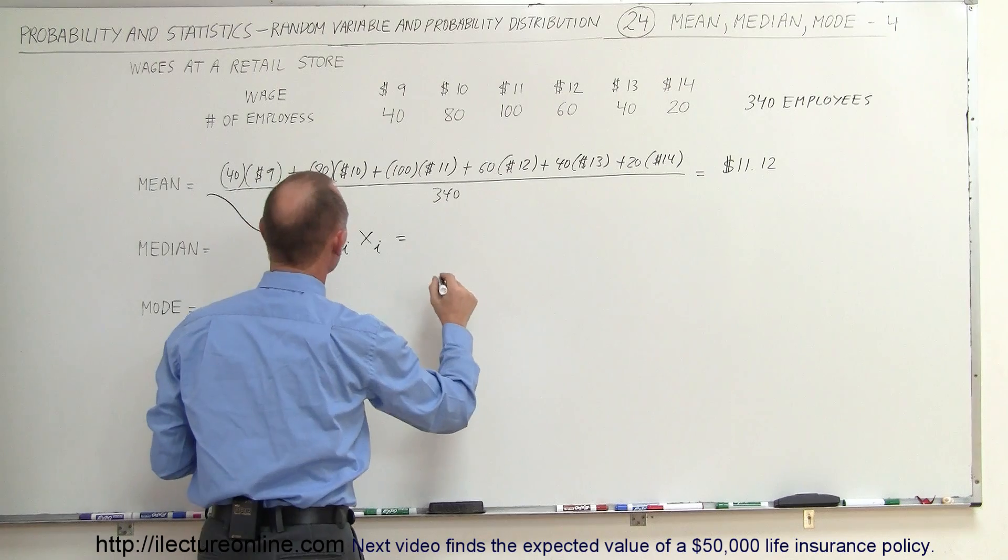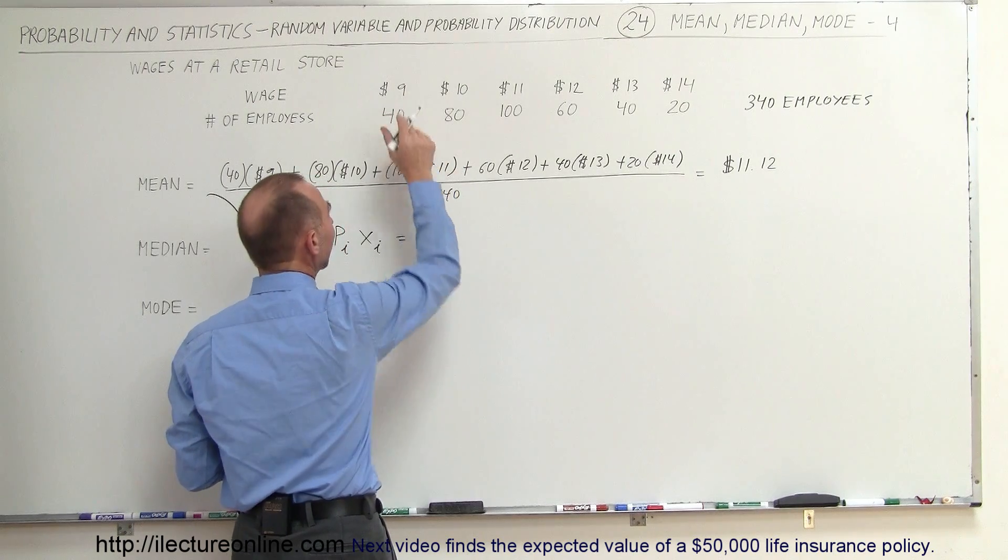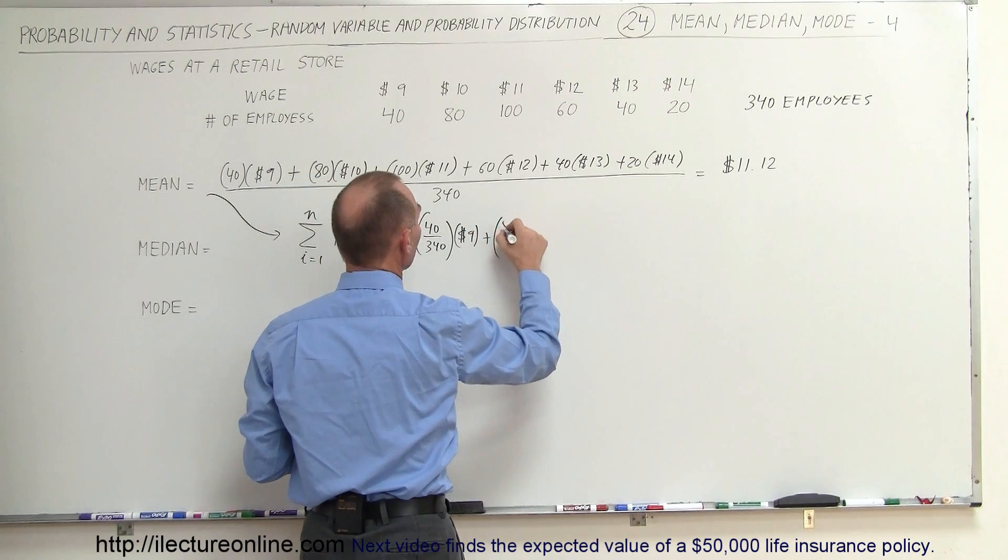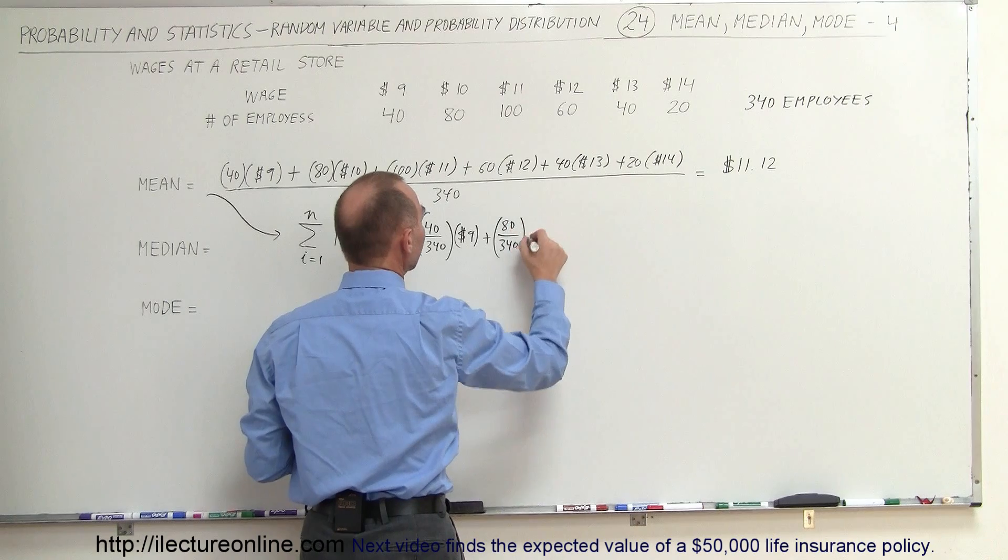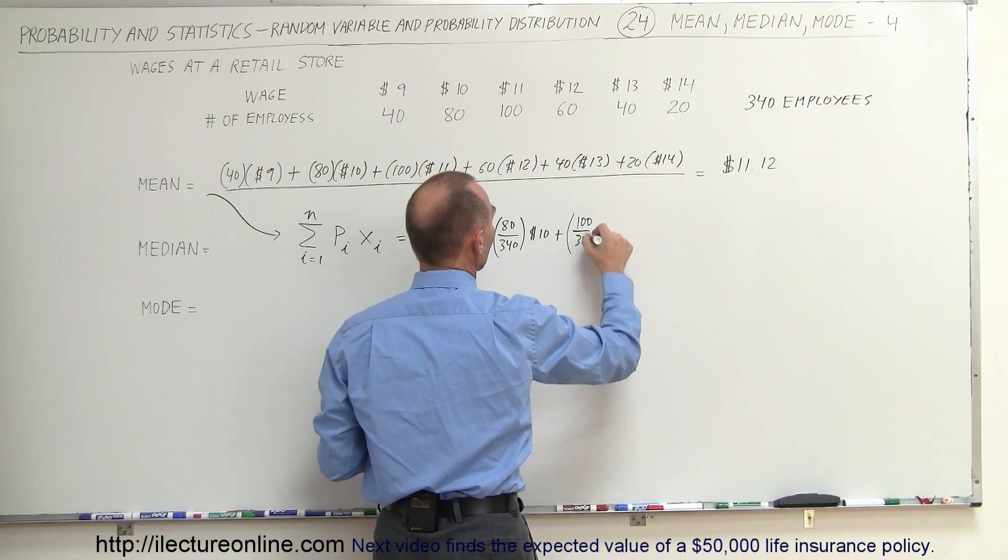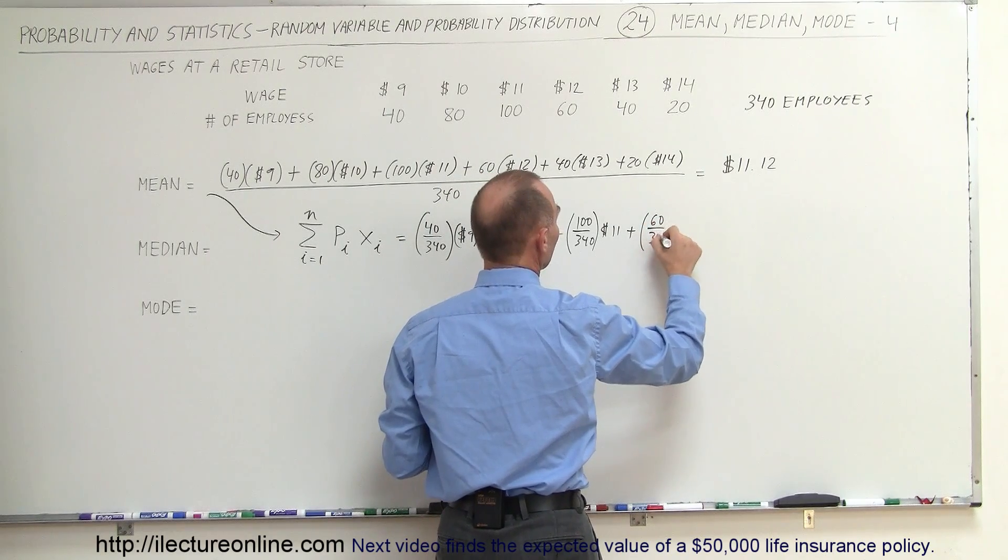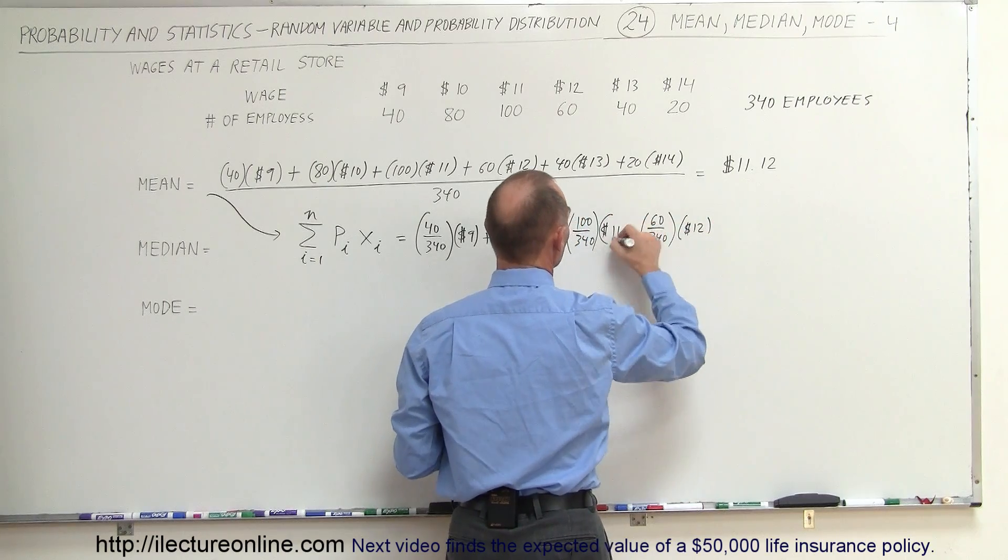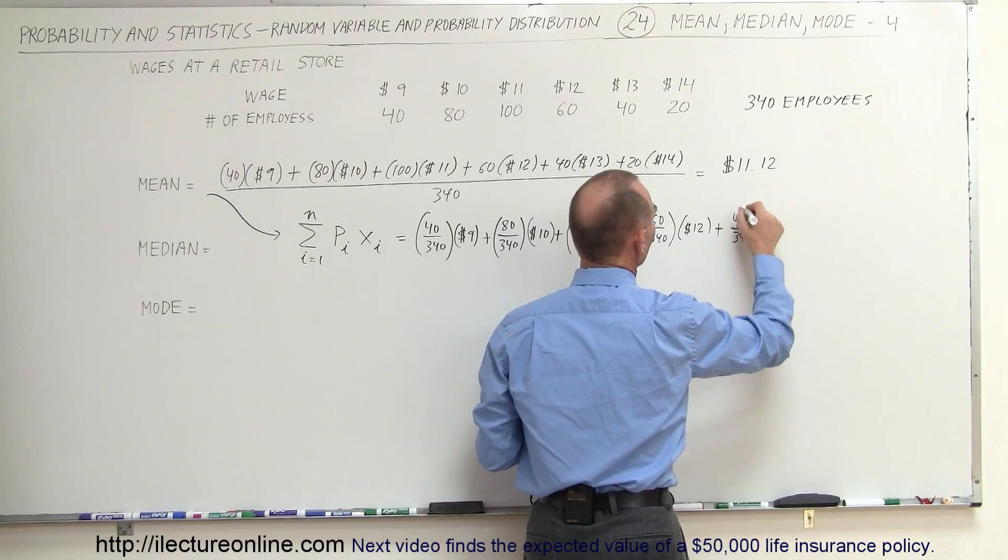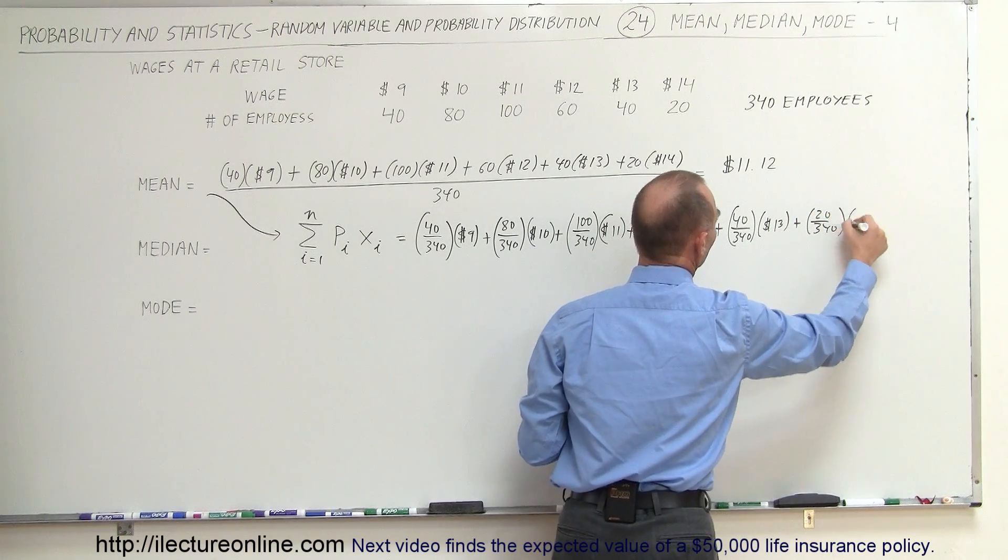And so, this is equal to the probability which would be 40 out of 340, that would be the probability of people earning $9, so we multiply that times $9, plus the probability that people earn $10, that would be 80 out of 340 times $10, plus the probability which is 100 out of 340 earning $11, plus the probability which is 60 out of 340 earning $12, plus the probability which is 40 out of 340 of earning $13, plus the probability 20 out of 340 of earning $14.